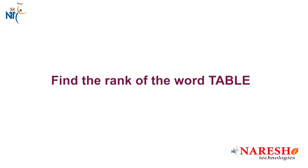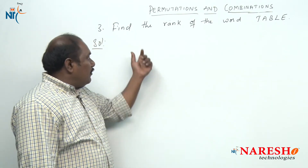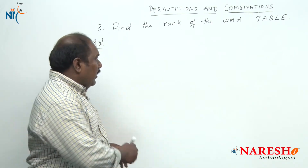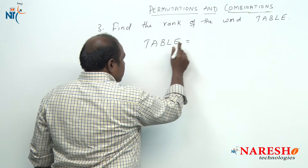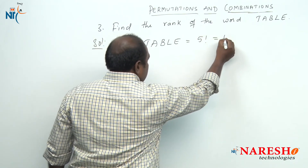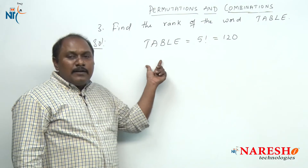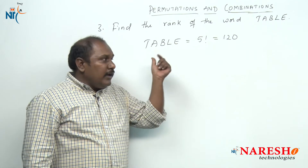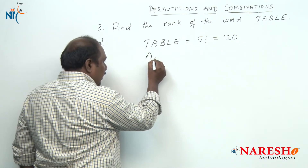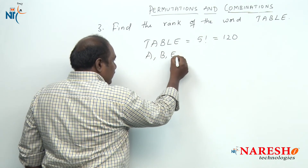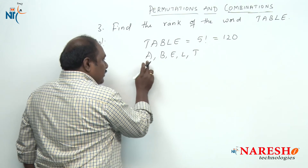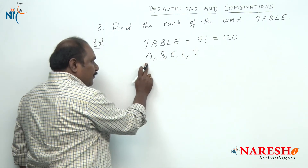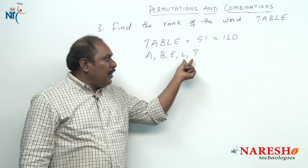Now let us take one more example. Find the rank of the word TABLE. In how many ways can we arrange the letters of the word TABLE? We have five different letters, which can be arranged in five factorial ways, which is 120. So my answer lies from 1 to 120. In this 1 to 120, we have arrangements starting with A, B, E, L, and T — each equal, so 120 divided by 5 gives 24 arrangements each.